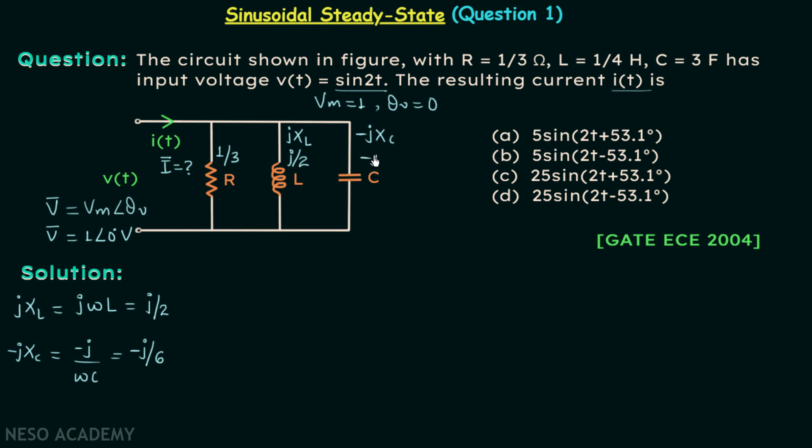So here we will have -j/6 ohms. Now let's say that the phasor current in this branch is IR phasor, the phasor current in this branch is IL phasor, and the phasor current in this branch is IC phasor. So in this way we have our circuit in frequency domain.